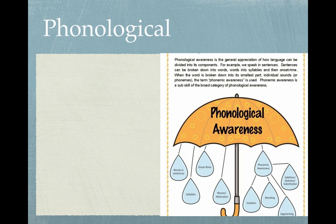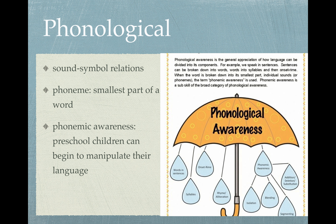Our first aspect is phonological language. You can hear it in the word — phono relates to sound. This is our sound-symbol relations. A phoneme is the smallest part of the word, and you need to make sure you know that. Phonemic awareness in preschool children means they can begin to manipulate their language. In a preschool child, they might be able to do something called blending.